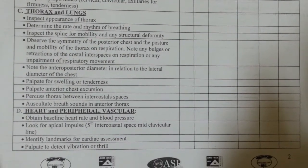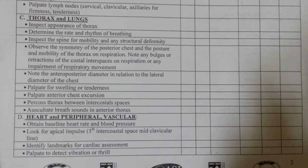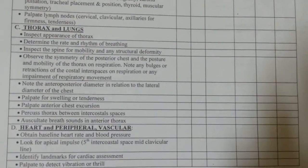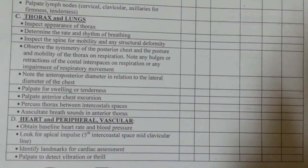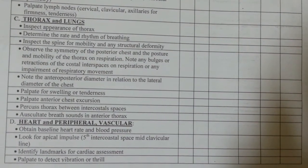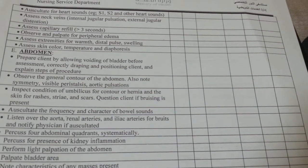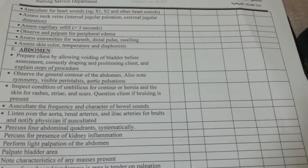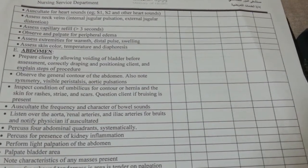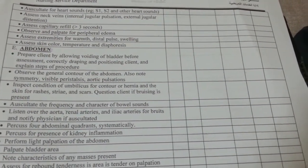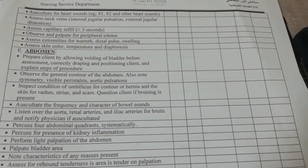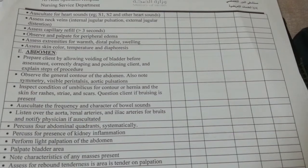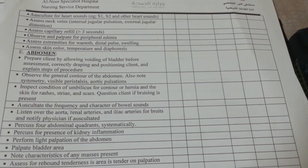Auscultate breath sounds in the anterior thorax. For the heart and peripheral vascular system, obtain baseline heart rate and blood pressure. Locate the apical pulse at the 5th intercostal space at the midclavicular line, and identify landmarks for cardiac assessment. Palpate to detect vibration or thrill, then auscultate for heart sounds S1, S2, and other heart sounds. Assess neck veins, internal jugular pulsation, and external jugular distension. Assess capillary refill, which should be no greater than 3 seconds. Observe and palpate for peripheral edema, and assess extremities for warmth, distal pulse, and swelling. Assess skin color, temperature, and diaphoresis.